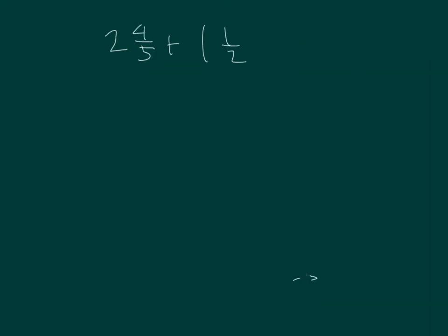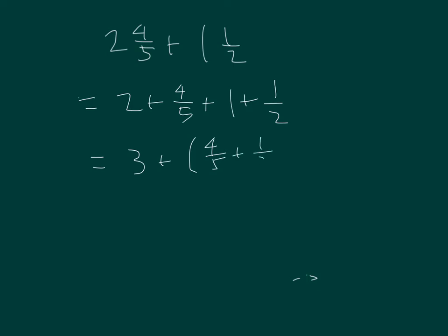Here I have 2 and 4 fifths plus 1 and 1 half. It equals 2 plus 4 fifths plus 1 plus 1 half. Adding our whole numbers, 2 plus 1 is 3, plus 4 fifths plus 1 half.